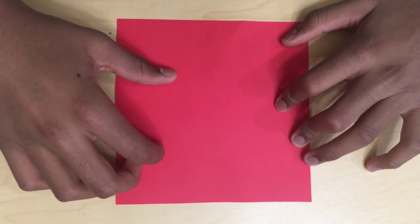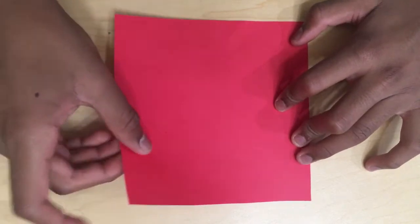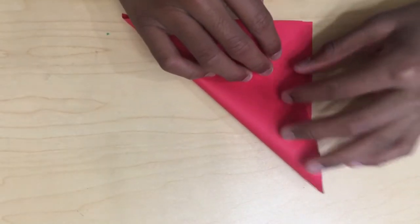Hello, today I'm going to make the origami rose. The first step to make the rose is to fold it diagonally.